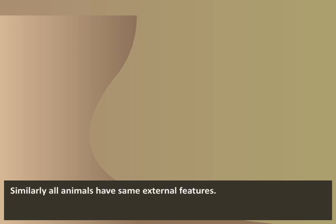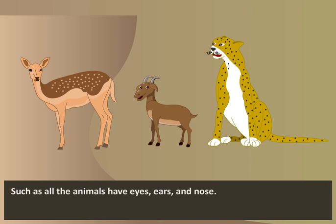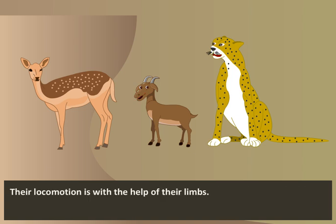Similarly, all animals have the same external features, such as eyes, ears and nose. Their locomotion is with the help of their limbs.